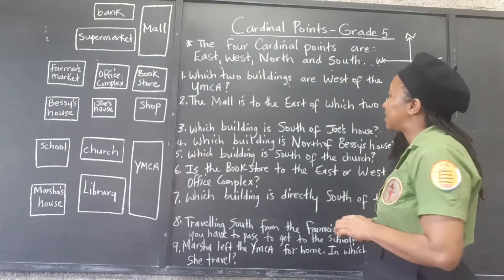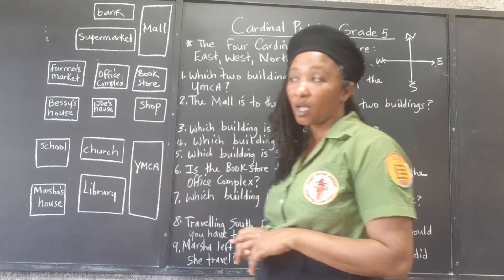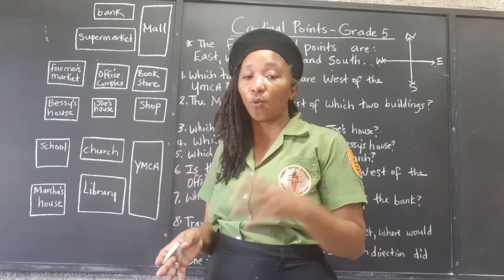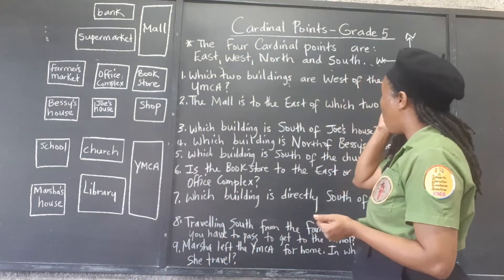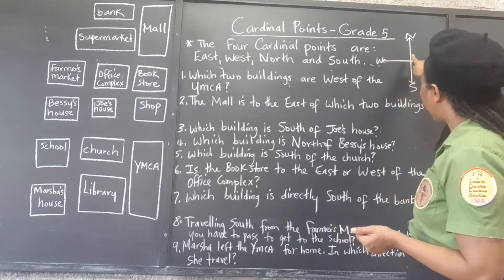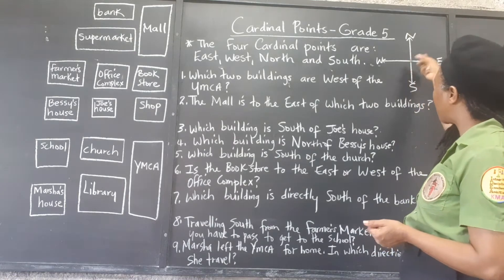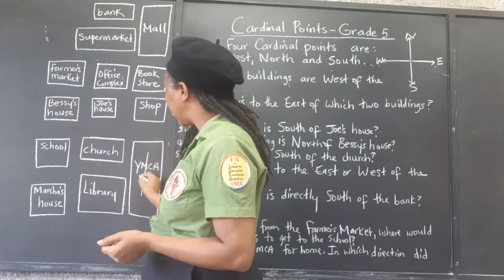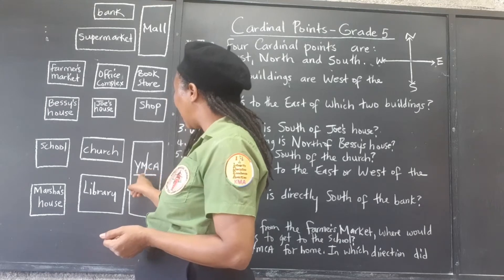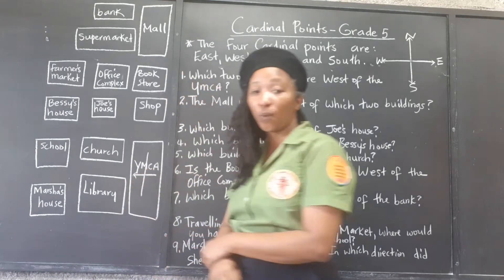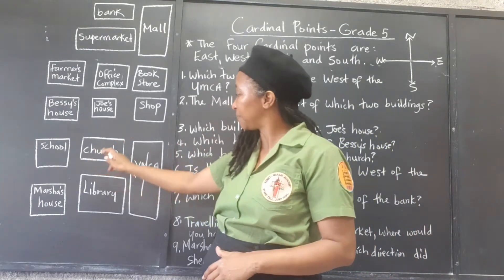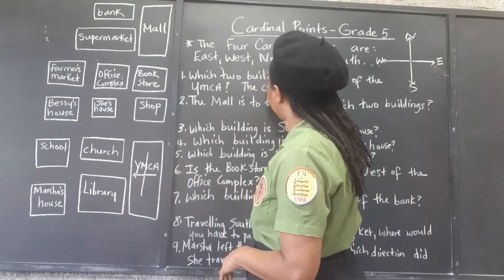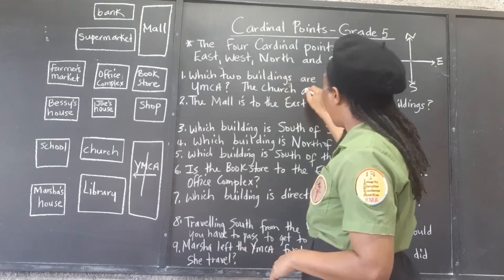Now, which two buildings are west of the YMCA? The YMCA is our reference point. So we're thinking from the YMCA, which two buildings are to the west. West is this direction, so it's as if the YMCA would be in the center — which two buildings are to that side of it. We can draw our cardinal points in the center of the YMCA. So which two buildings are directly to the west of the YMCA? That's the church and the library.